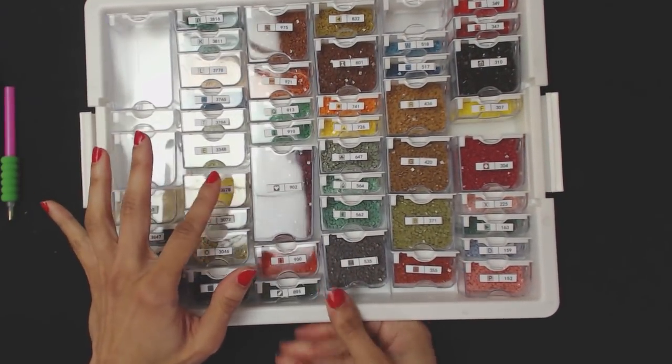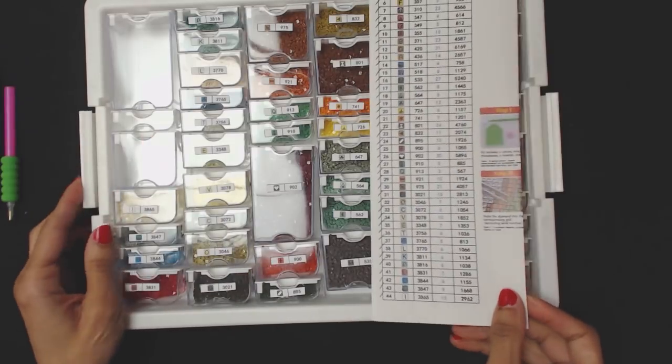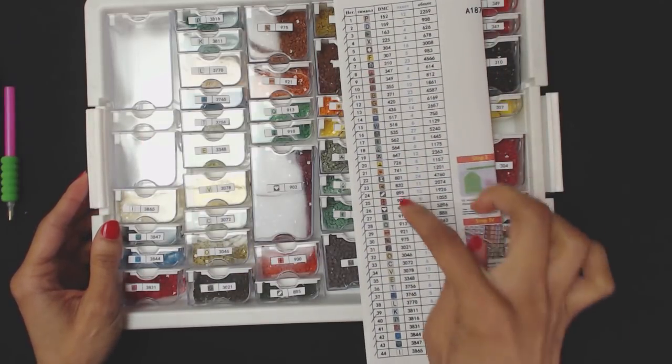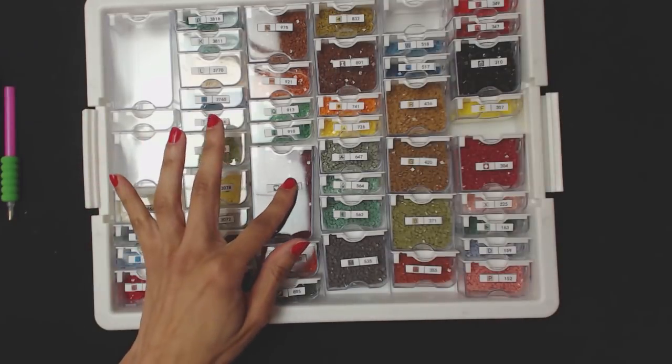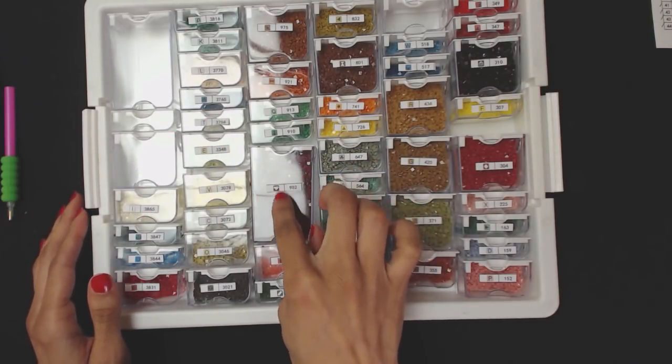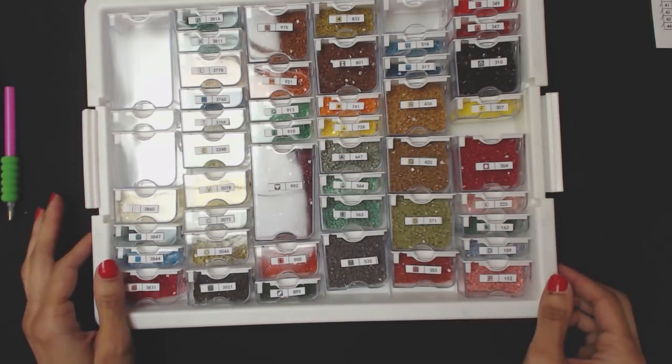And then for the labels here, I made a copy of my checklist and then I just cut out the numbers and I used a putty, a blue tack, to stick them on so that they do come off when I'm done.